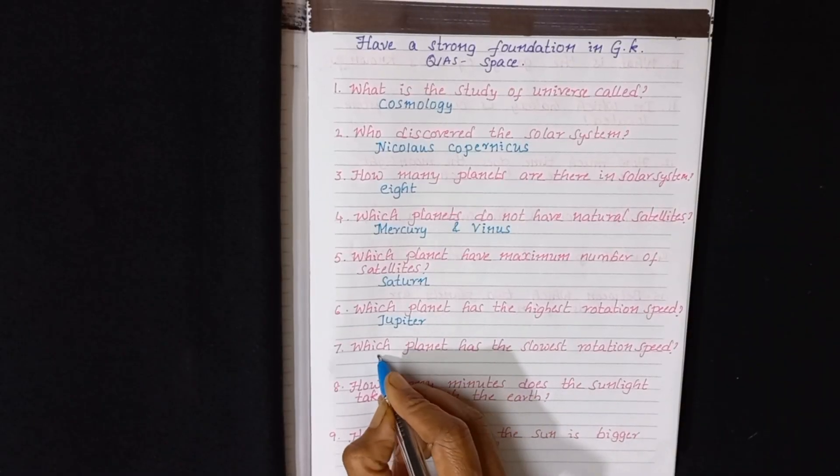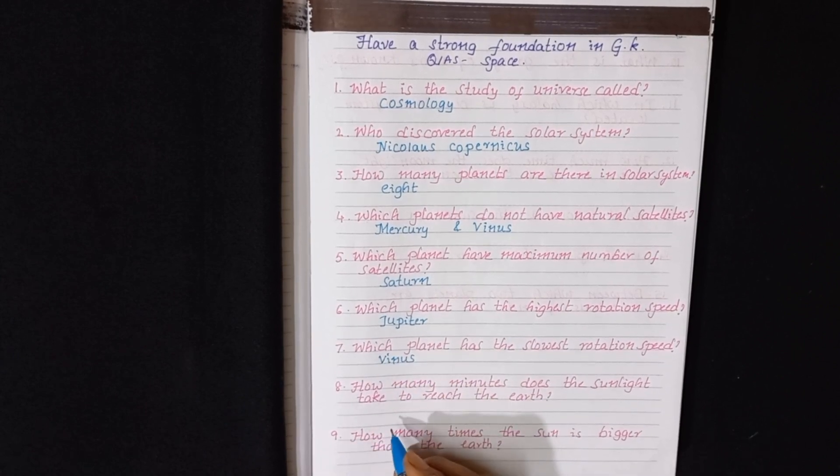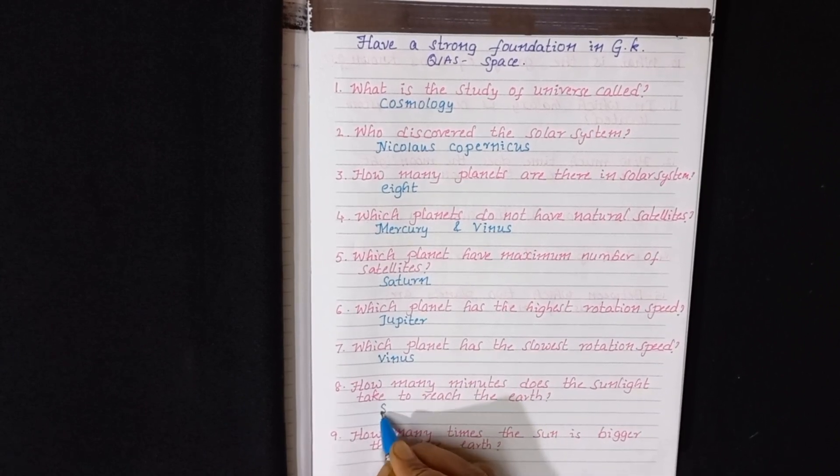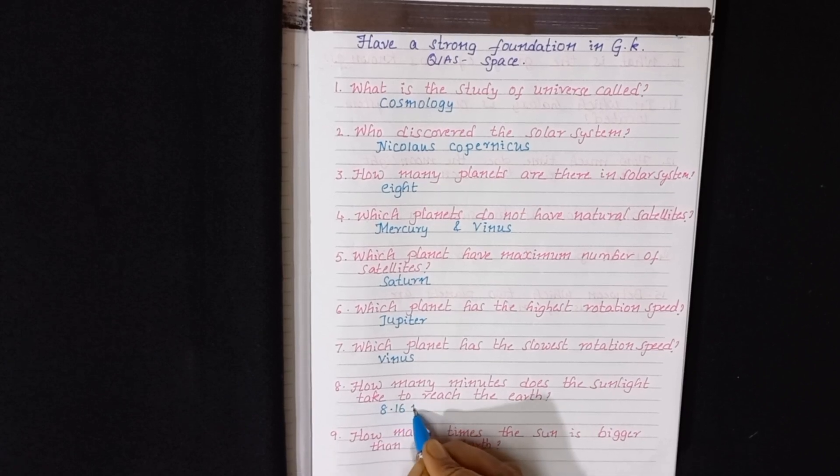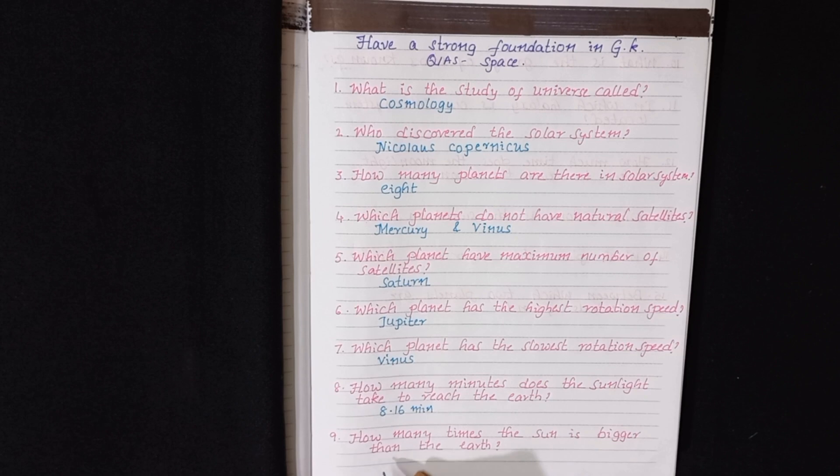Which planet has the lowest rotation speed? Venus. How many minutes does the sunlight take to reach the earth? 8.16 minutes.